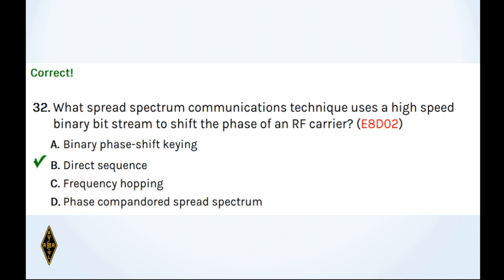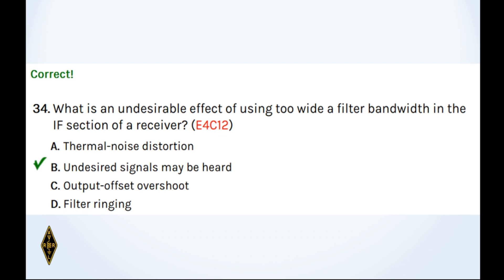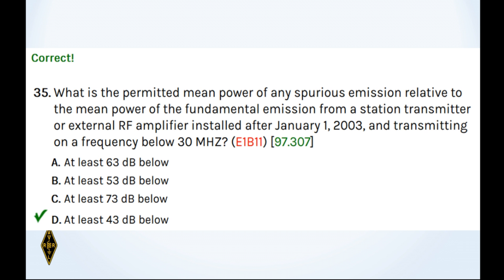And 33, how are the wavelength scales on a Smith chart calibrated? That's at the outer ring of the Smith chart and it's in fractions of transmission line electrical wavelength. And what is an undesirable effect of using too wide a filter? Well, you'll hear extra signals that you don't want. Undesired signals may be heard. 34B. And 35, what is the permitted mean power? Well, at least 43 dB down. That's the 43 dB down route.